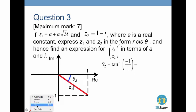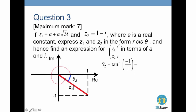Next we find the modulus-argument form for z2. Since the imaginary part is negative — it's negative i — we draw the Argand diagram differently, with the imaginary value plotted below the horizontal axis. To find the argument θ₂, we compute inverse tangent of (−1 over 1).